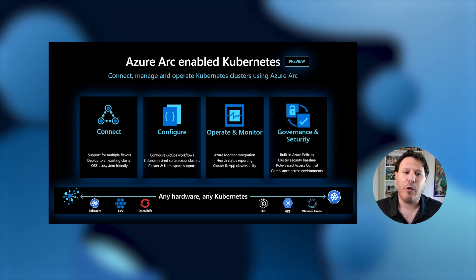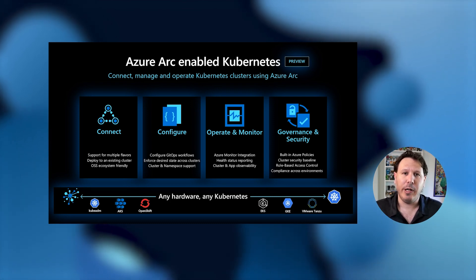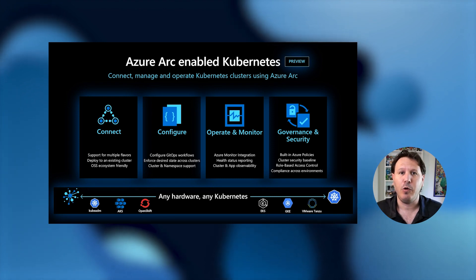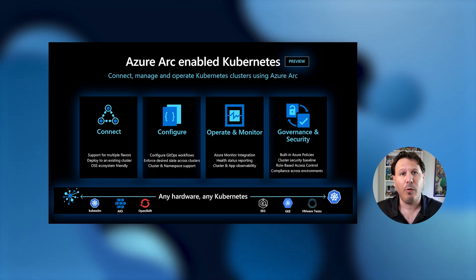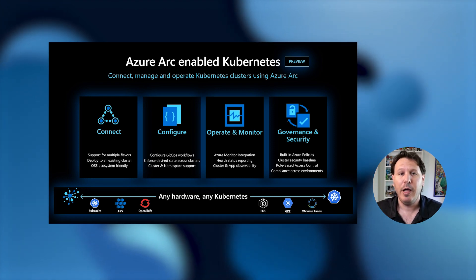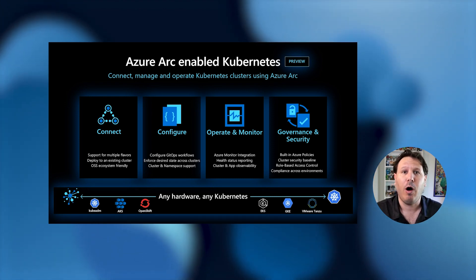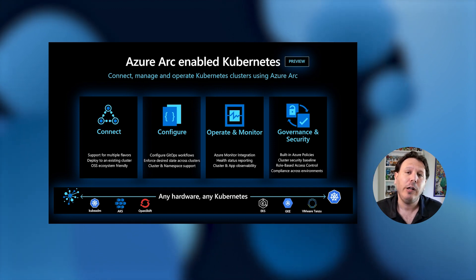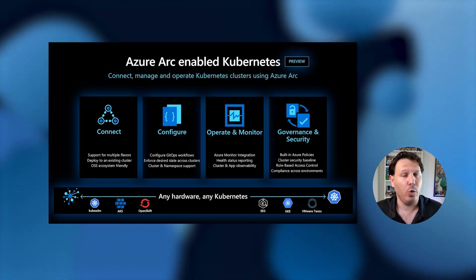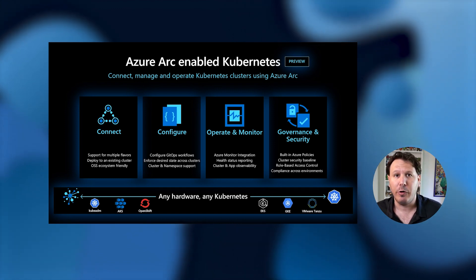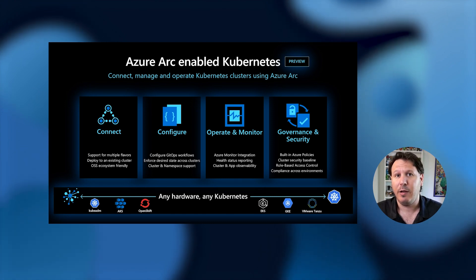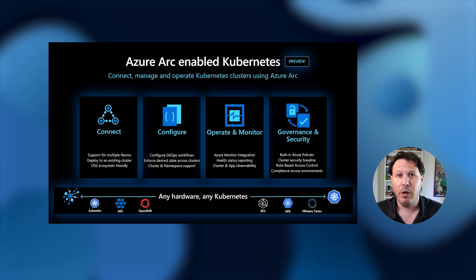When it comes to Azure Arc-enabled Kubernetes, it's all about taking all the Kubernetes clusters that you have deployed outside of Azure and connecting those into Azure Arc. By doing so, you are starting the process of fleet management. You have all your clusters in a single pane of glass, and everything is in the portal so you can start managing it.